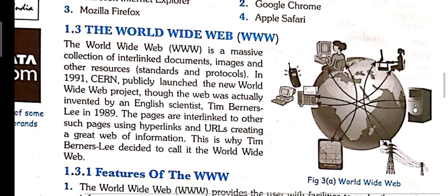WWW is a massive collection of interlinked documents, images, and other resources. Web pages contain text, videos, audios, and images — all these things are present in our web pages, and they are interlinked with each other somewhere. Because they are interlinked, we are able to access them.